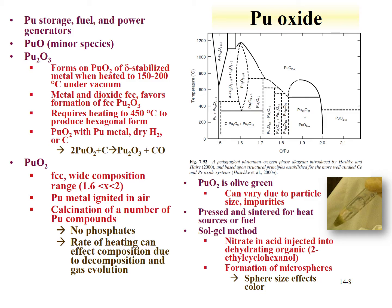The dioxide has a wide composition range and is face-centered cubic. It can be produced from oxidation of plutonium metal — for instance, if plutonium metal is ignited in air — or from calcination of a number of plutonium compounds. Calcination of plutonium oxalate precipitates yields the dioxide; however, if you precipitate phosphates you will not get the dioxide. The heating rate during calcination affects decomposition due to the rate of gas evolution in the material.